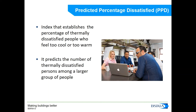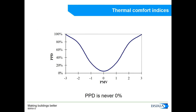The next index is the PPD or Predicted Percentage of Dissatisfied. As its name indicates, the PPD predicts the number of people who are going to feel uncomfortable in a certain environment. As we can see in this graph, PMV and PPD are related. If people voted that they were feeling extremely hot or very cold, then 100% of people would feel dissatisfied. As the PMV approaches zero, the PPD goes down. But PPD is never zero percent because there will always be a percentage of people who feel dissatisfied with the environment.